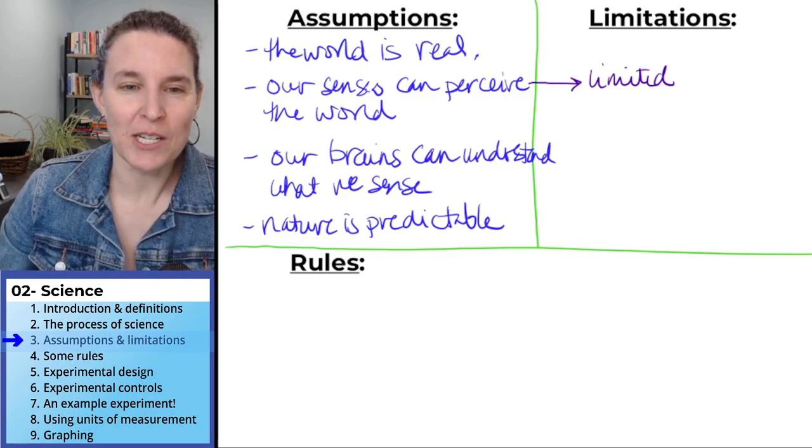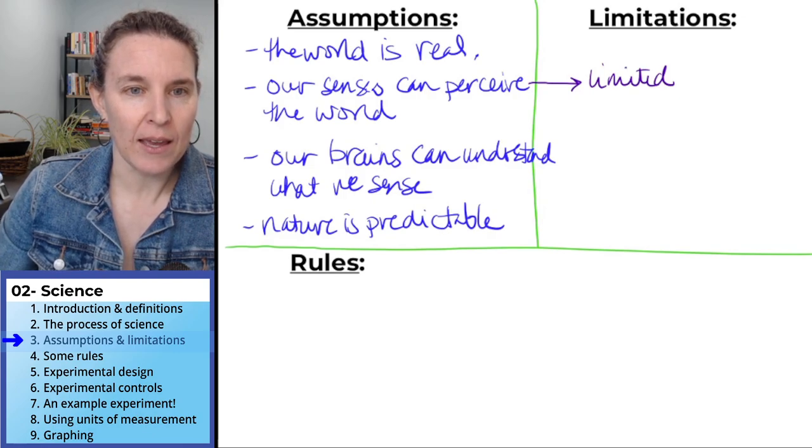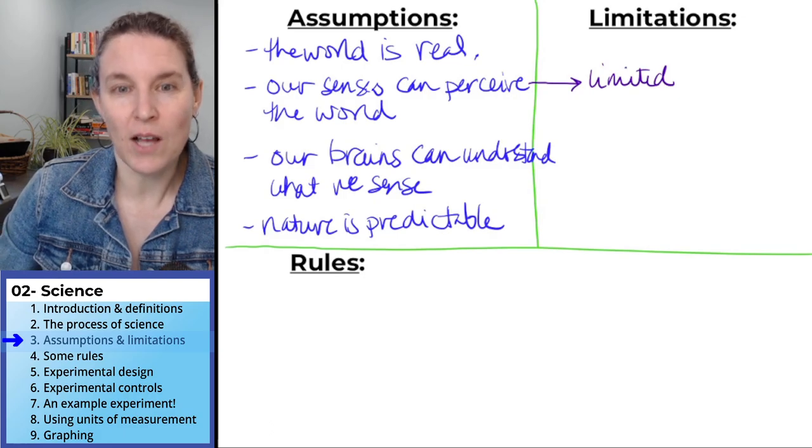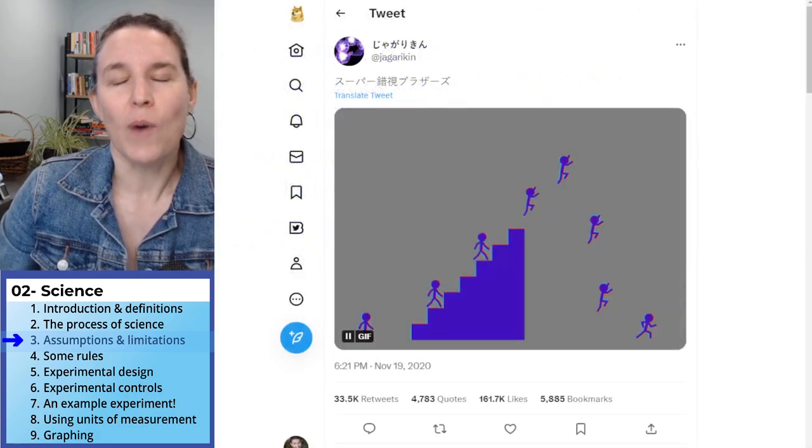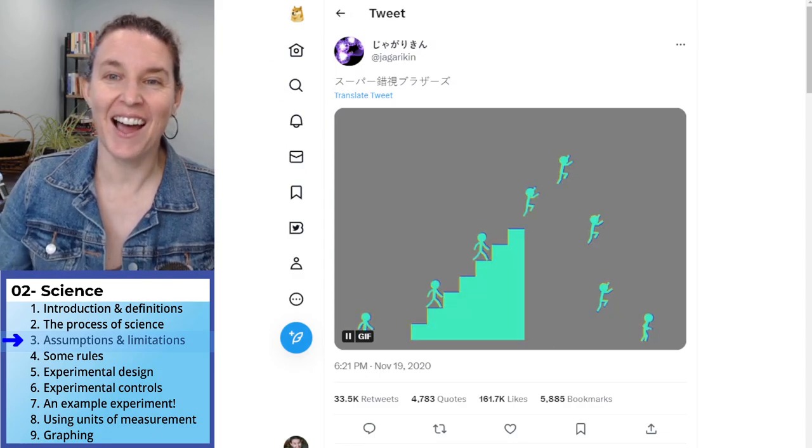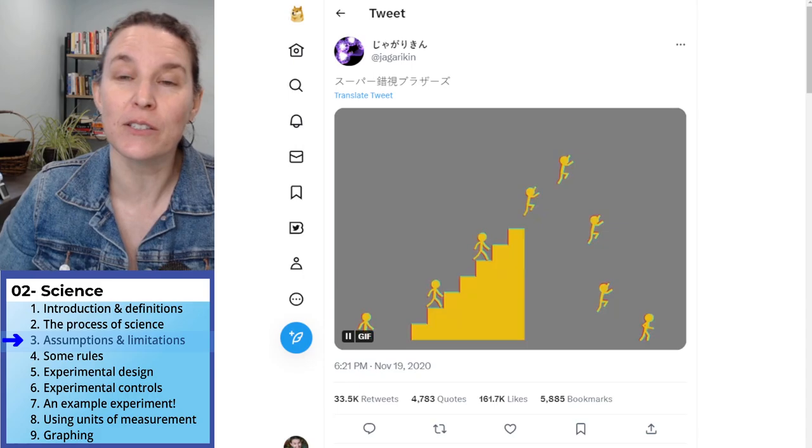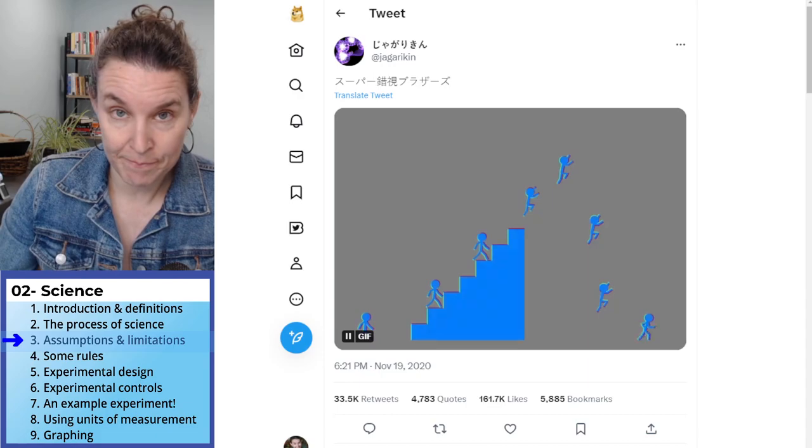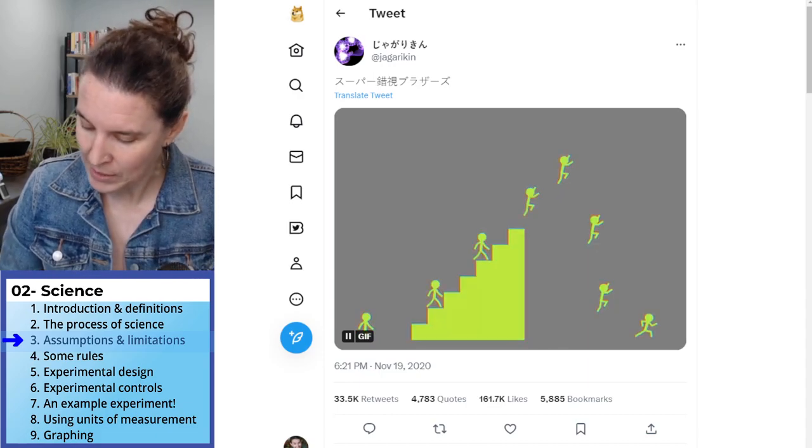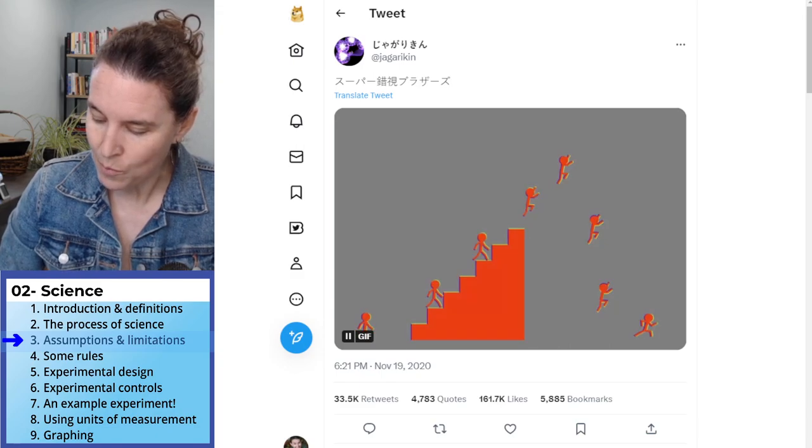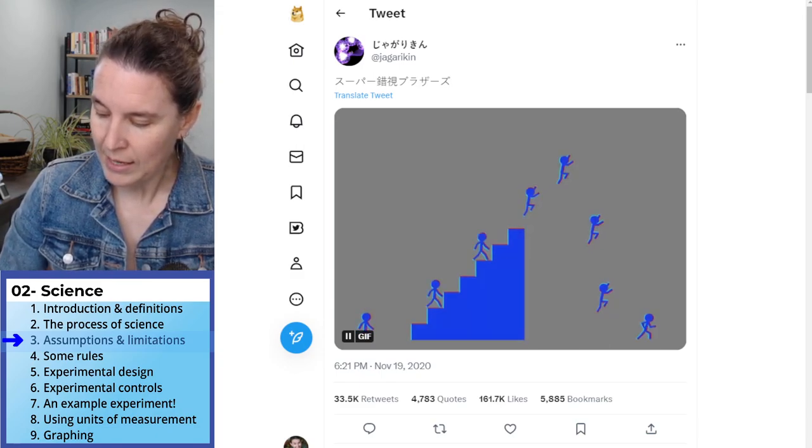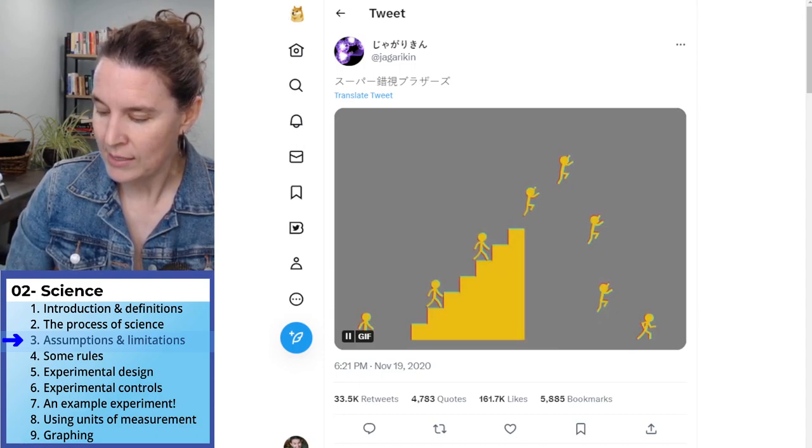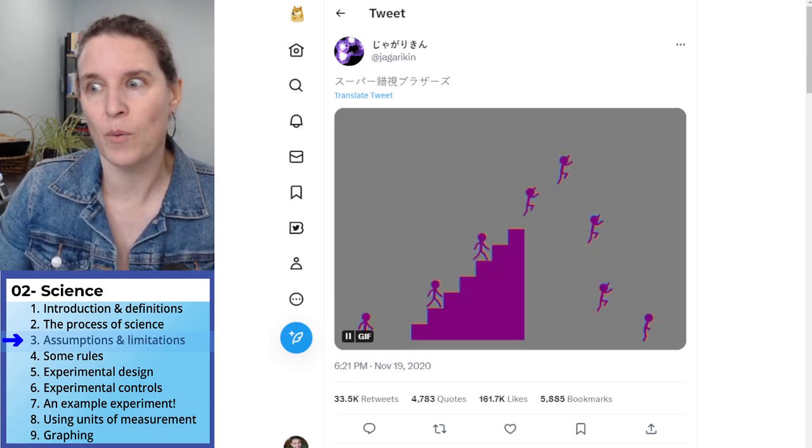And I'm just going to go ahead, I'm going to show you really fast, I went down the optical illusion rabbit hole last night and I found, like, oh my gosh, go look at all the optical illusions out there, our powers of perception are limited. And I'm going to add this one here as well. Our brains can be unreliable.